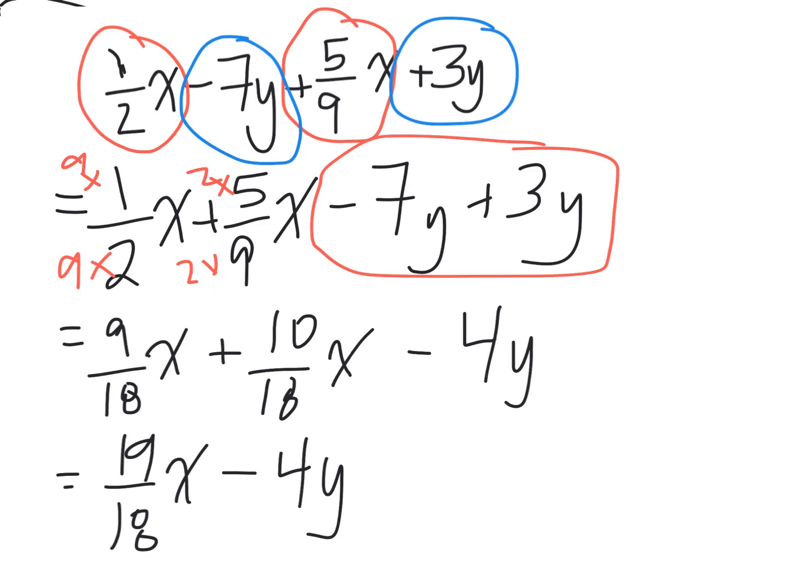And that's how to take an example where you have a rational coefficient, a fraction for the number attached to your variable, and you'll combine them. So you just have to make sure you're using your addition and subtraction of fraction rules. Take care.